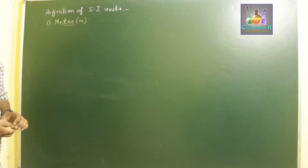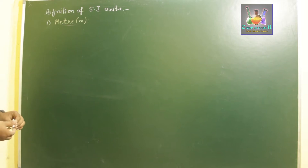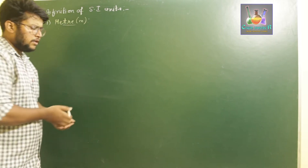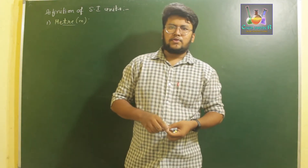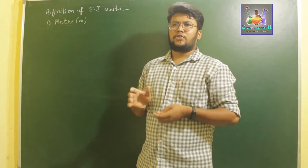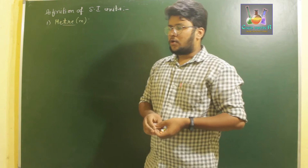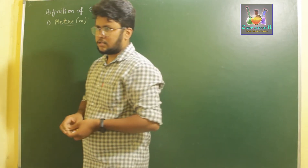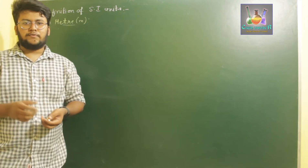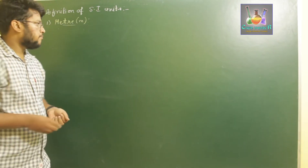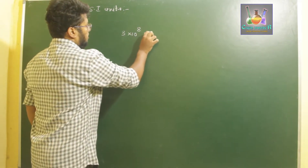Next, we discuss the definitions of SI units. The SI unit meter is for the physical quantity of length, and we measure distances using meters. To define meter, we use the speed of light. The speed of light in vacuum is 3 × 10⁸ meters per second.